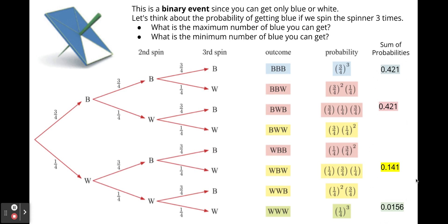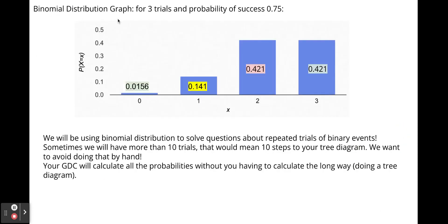We can represent these probabilities in a table where x is the number of blues, showing the probability of getting zero, one, two, or three blues. This is an example of a probability distribution with three trials and a probability of success of 0.75 — in our case, success was landing on blue. So the probability of getting blue in one spin is 0.75.